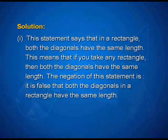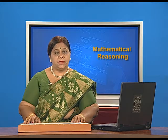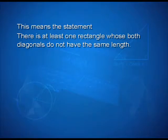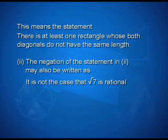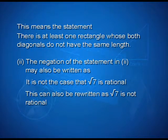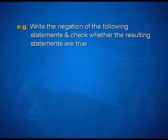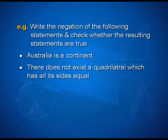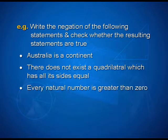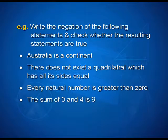We shall consider some more examples. Write the negation of the following statements. First: both the diagonals of a rectangle have the same length. Second: root 7 is rational. For the first, the negation is: it is false that both the diagonals in a rectangle have the same length. This means: there is at least one rectangle whose both diagonals do not have the same length. For the second, the negation is: it is not the case that root 7 is rational, which can be rewritten as: root 7 is not rational.